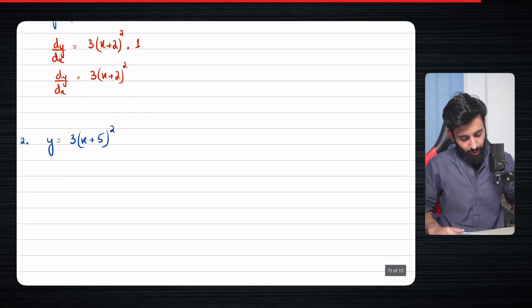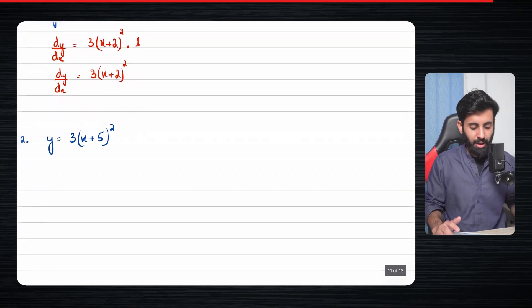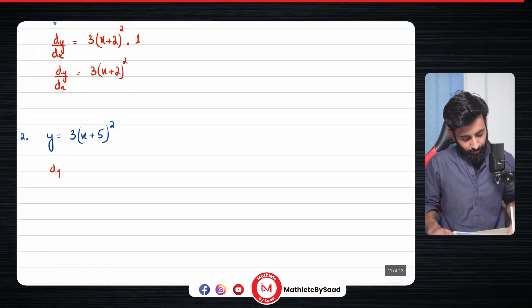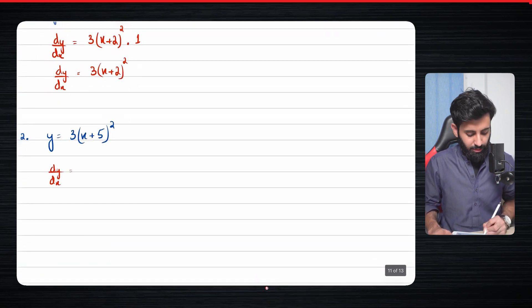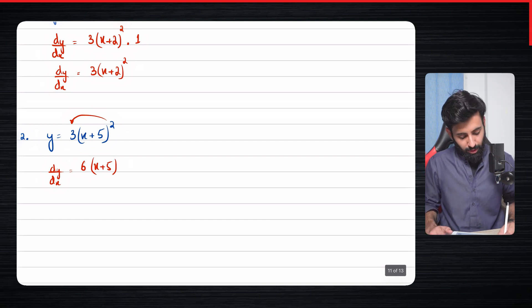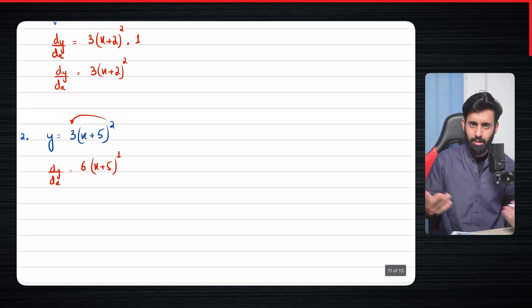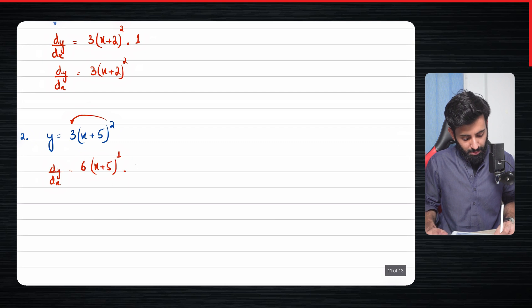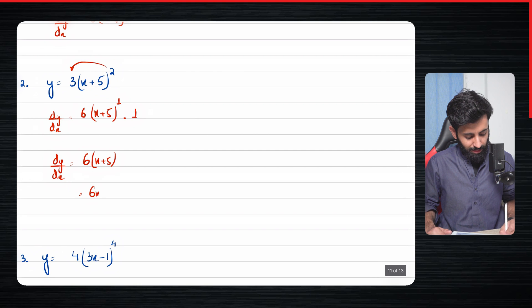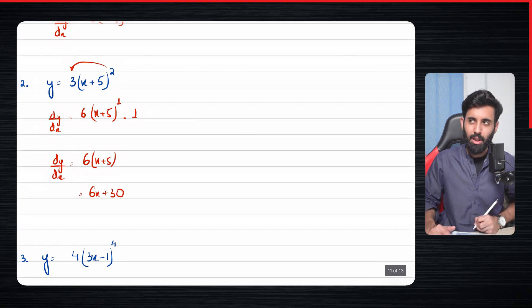In the second example, two gets multiplied by three, so that's six. We have (x + 5) as it is, we reduce the power by one — so that's just one, might as well not write it — and then multiply by the differential of the expression inside the bracket, which is one. So dy/dx is 6(x + 5), which you can expand and write as 6x + 30.